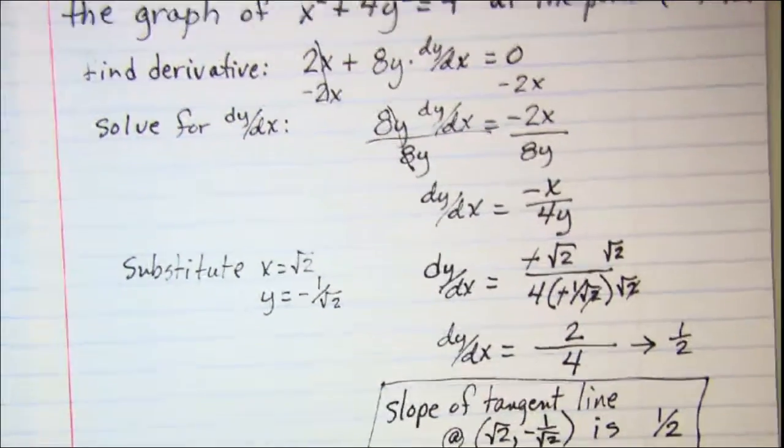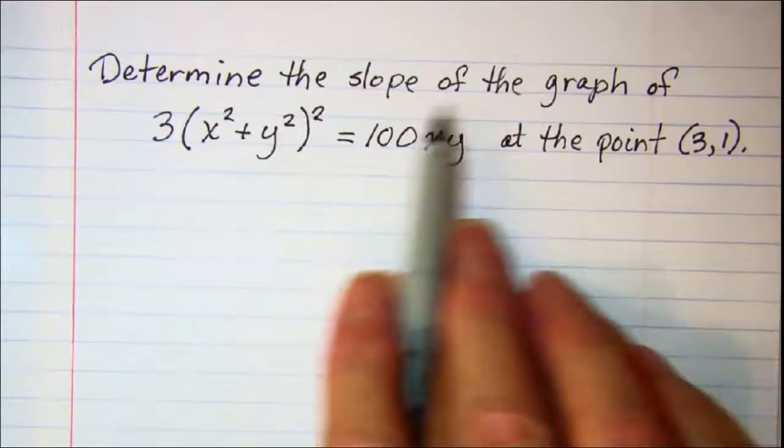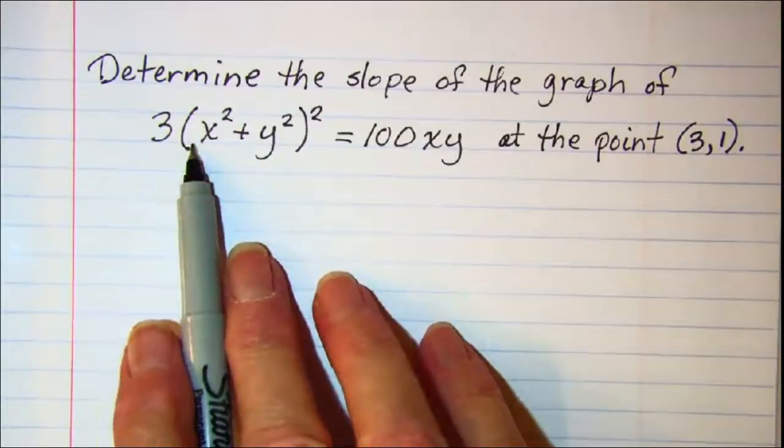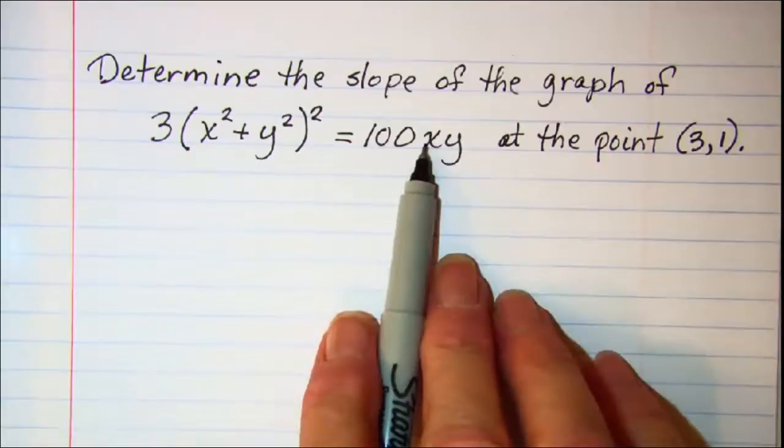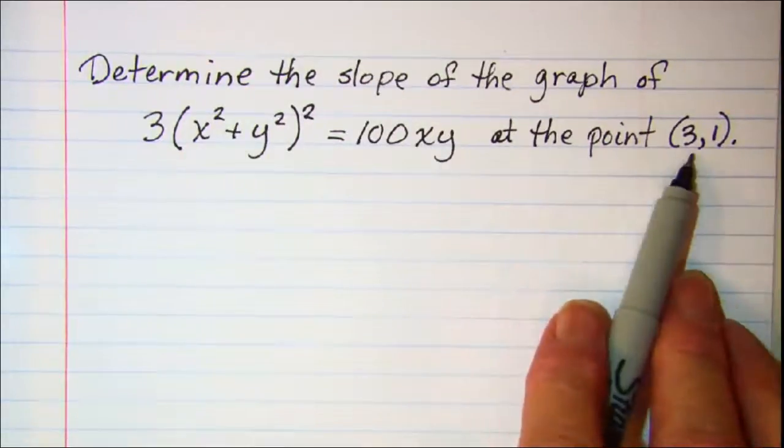Let's do another one. Determine the slope of the graph of 3 times x squared plus y squared quantity squared equals 100xy at the point 3, 1.